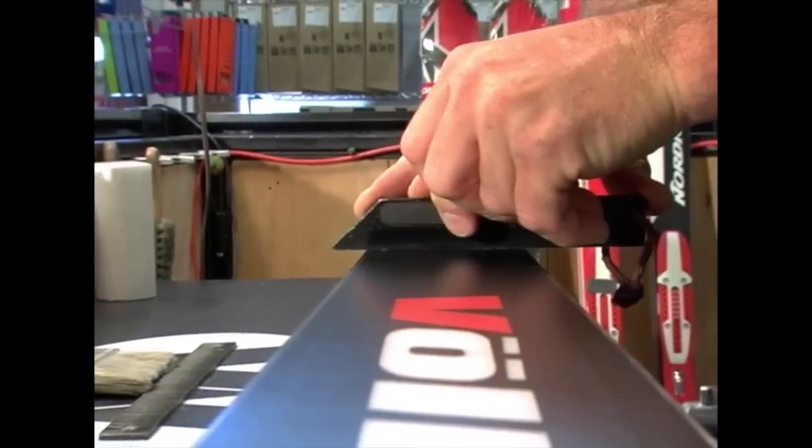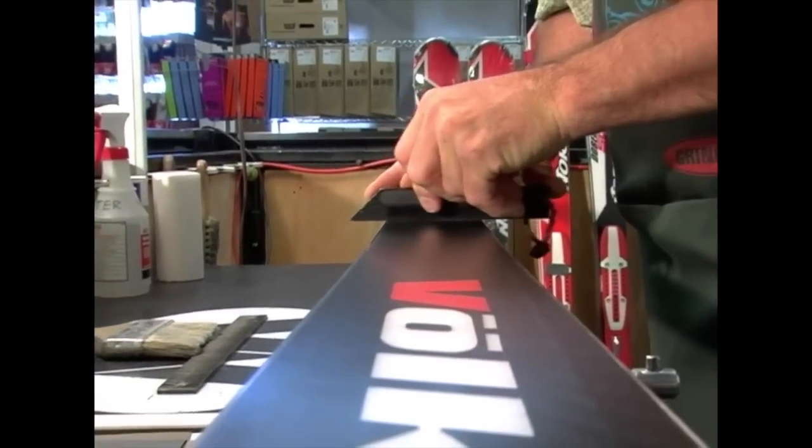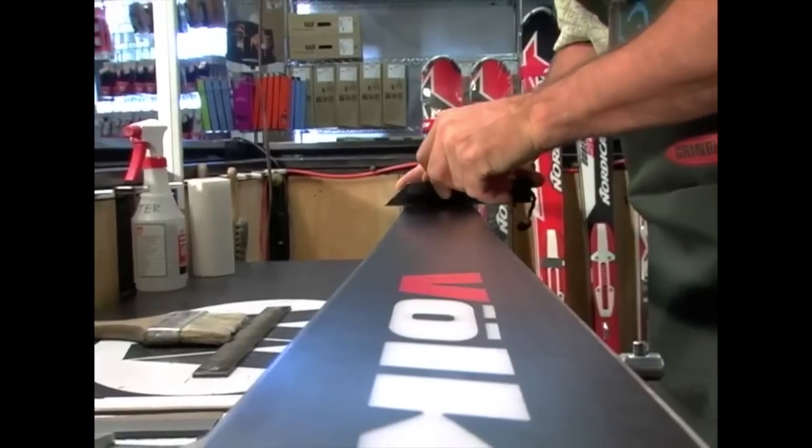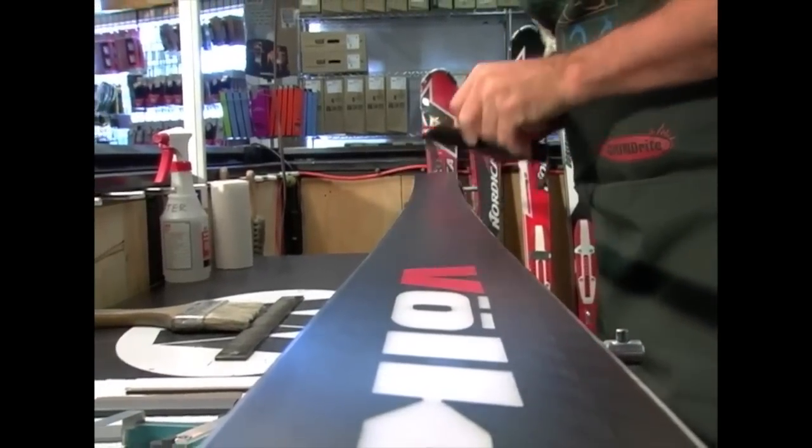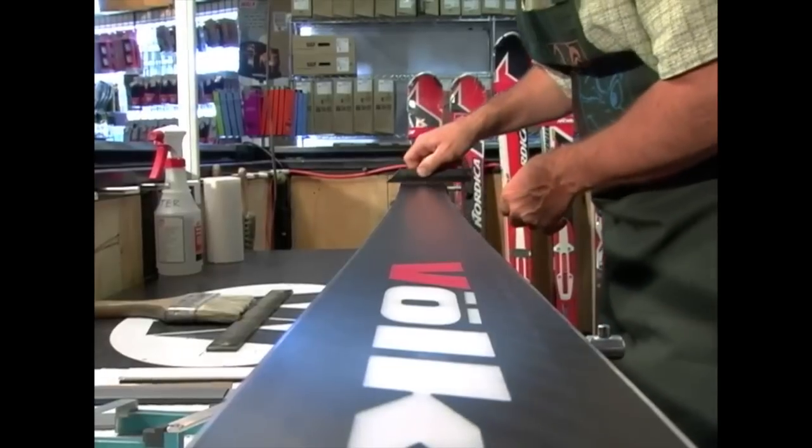I begin the base bevel process with my straight edge or flat bar. I can either sight through it to inspect the condition of the base and edge, or I use a light rubbing technique which allows me to read the base.